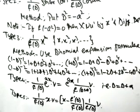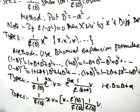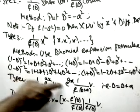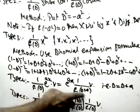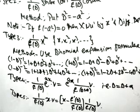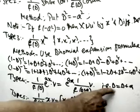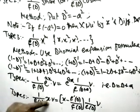Type 4 is when we have a function multiplied by e^(ax). The formula is: (1/f(D))·e^(ax)·V = e^(ax)·(1/f(D+a))·V, meaning we take e^(ax) outside and replace D with D+a everywhere in the operator.